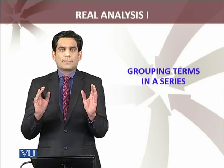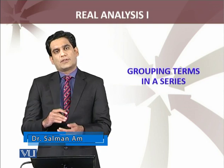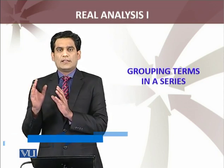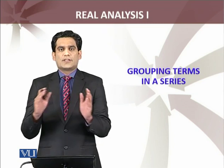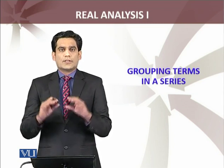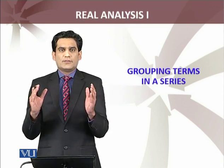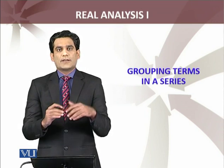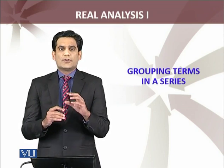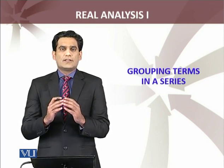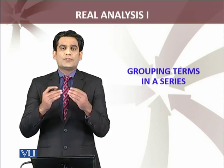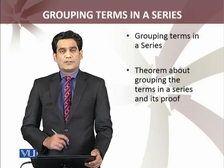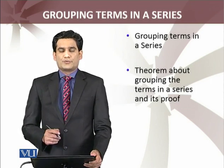Finite sum में तो हमें पता है कि real numbers associative होते हैं, तो अगर आप sum करें पहली दो terms को, या sum करें second or third term को and then add up to the first term, the answer will be the same. Is it true for the series also? क्योंकि series में तो infinite terms होती हैं — infinite terms में आप group बना रहे, and you got another new series. क्या वो series भी convergent होगी अगर parent series convergent है? So we are going to discuss grouping of series and the theorem about convergence of the grouped series.